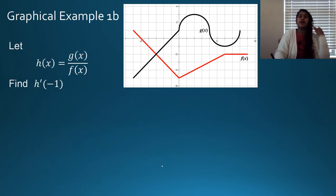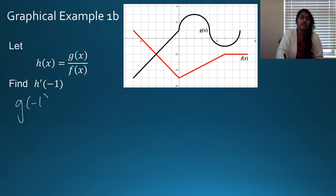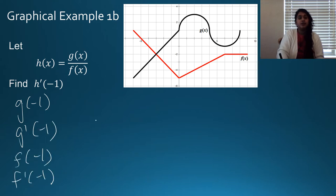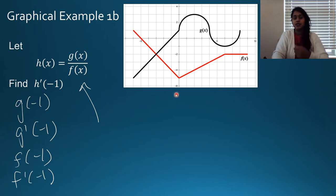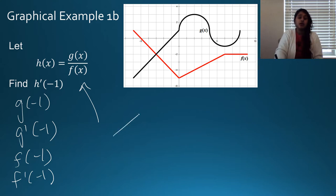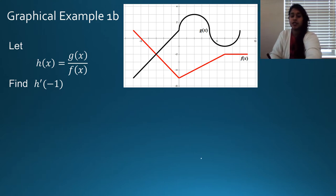Here's another graphical example using the same concept. You need g of negative 1, g prime of negative 1, f of negative 1, and f prime of negative 1 — same equation. Looking at the graph, there's nothing funky happening at negative 1: no corner, no cusp, no vertical tangent. So we're good to differentiate.